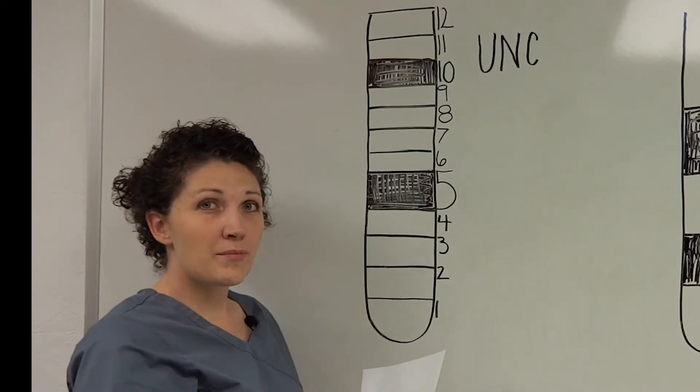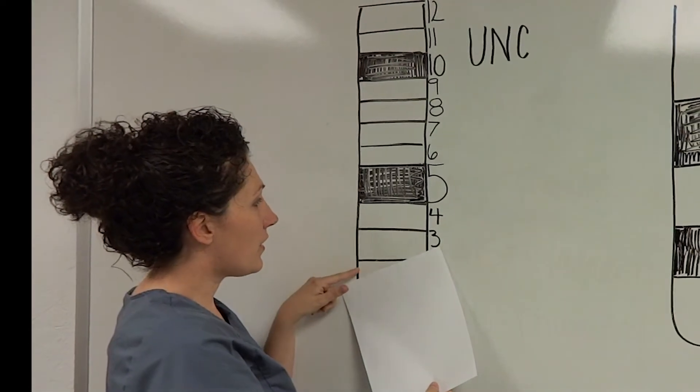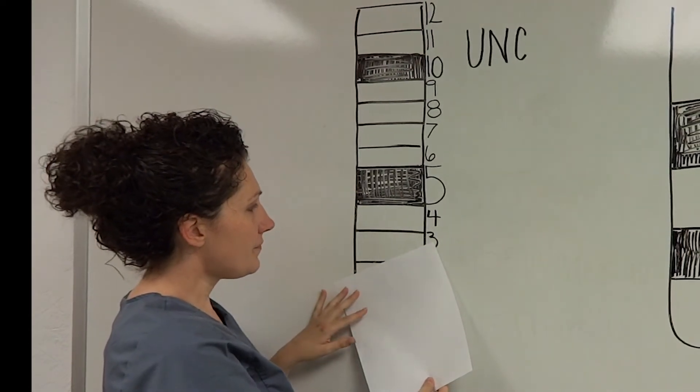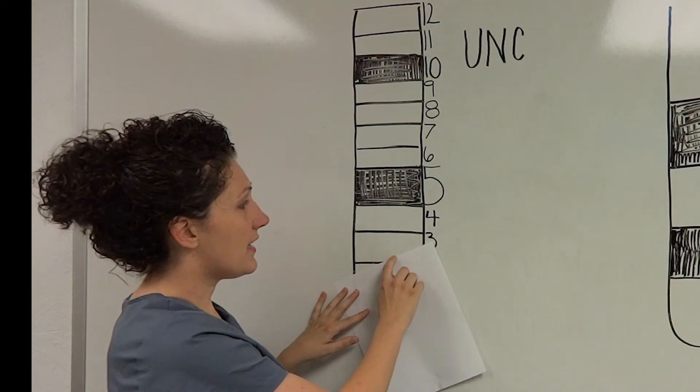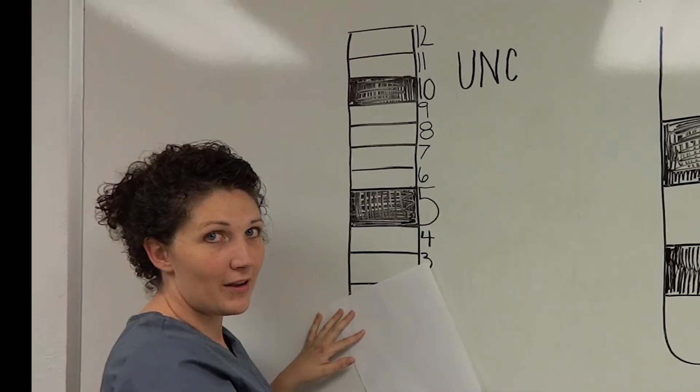Now let's say, for example, you're tilting it into the gingival sulcus and you have it at an angle, so it's covering the two area and the three area. What you want to do is take the measurement from the top. So this would actually be a measurement of a three millimeter pocket.